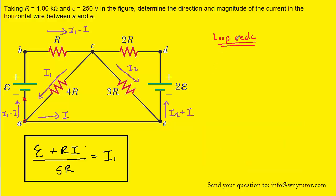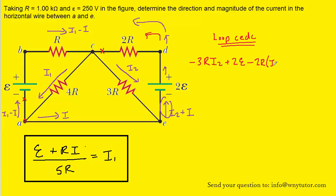We next apply the loop rule to the loop marked CEDC. Starting at point C and returning to point C, we encounter a resistor and we're flowing with the current, so that's a negative potential change equal to the resistance multiplied by the current I2. We continue through the loop, turn upward, and cross a battery going from negative to positive plate — a positive potential change equal to 2E, so we have plus 2E. Then we make a left-hand turn, moving in the same direction as the current I2 plus I. That's a negative potential change equal to the resistance 2R multiplied by the current I2 plus I. We then return to where we started and set this equal to zero.